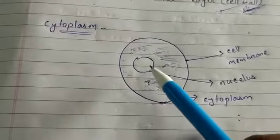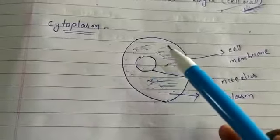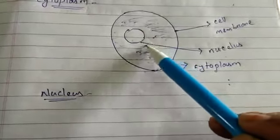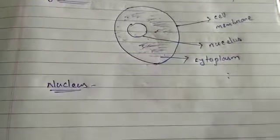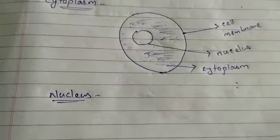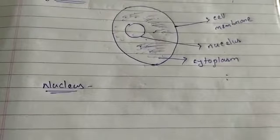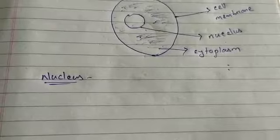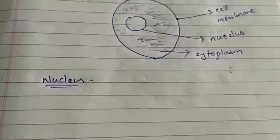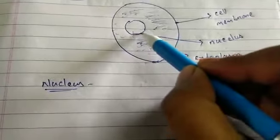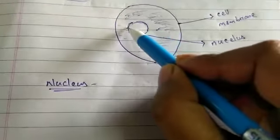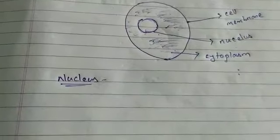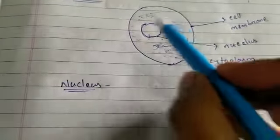The nucleus is situated at the center of the cell and it is spherical in shape. It is the most important part of the cell. The nucleus remains surrounded by a membrane called the nuclear membrane, which separates it from the cytoplasm.